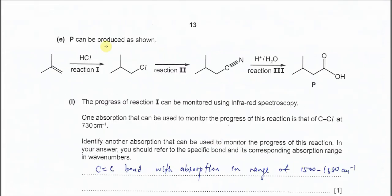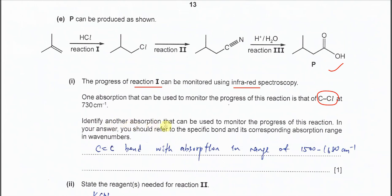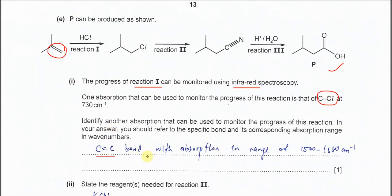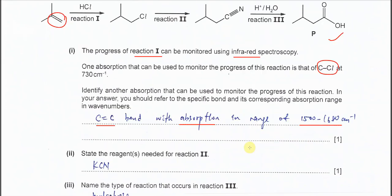Part E, P can be produced as shown, this one, a carboxylic acid. For part 1, the progress of reaction 1 can be monitored using IR spectroscopy. One absorption that can be used to monitor the progress is C=O, means the formation of C=O, if there is a presence of C=O, means it's forming more and more and more, right? Identify another absorption that can be used to monitor the progress of this reaction. It's quite easy because after the reaction 1, we know that C=C double bond is gone. So means we have to monitor the C=C double bond, with the absorption in the range of 1500 to 1680.